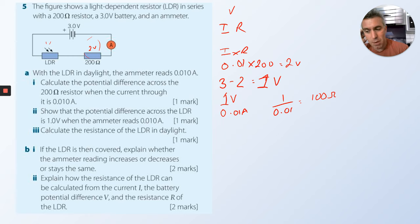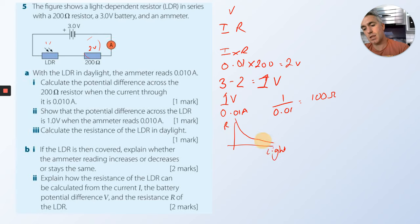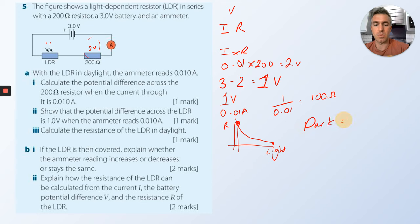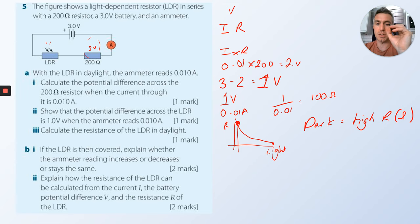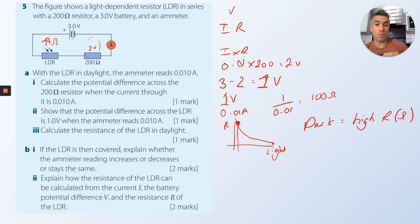If the LDR is covered, explain whether the ammeter reading increases, decreases, or stays the same. Looking at the LDR graph of light vs resistance: when it's bright, small resistance; when it's dark, large resistance. Dark equals high resistance. If you put a harder obstacle in the circuit, the current decreases.